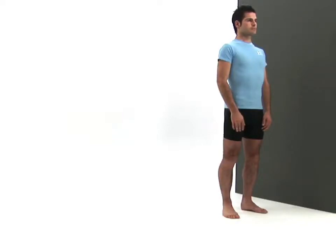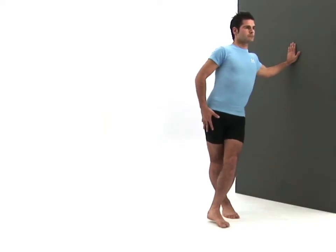For this exercise, you will need a wall to lean against for support. Begin by standing upright in your neutral position side onto your wall with your closest hand palm down against it. Cross your foot closest to the wall over and in front of your other leg.